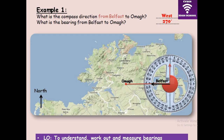A protractor is the instrument we use to measure bearing. It is important to know that some protractors are complete circles, as shown here. But some are half-circle, which is a 180-degree protractor. When you have such a protractor, you extend the line — knowing it is already 180 — then measure the remaining angle in that direction and add it to 180 to get your total.